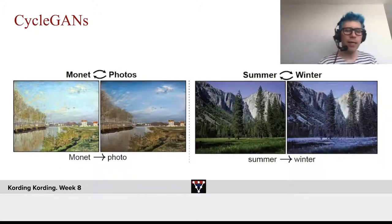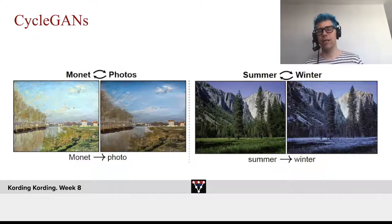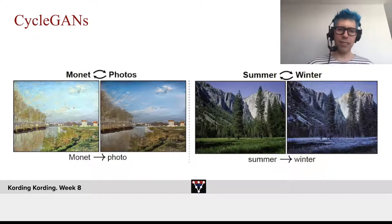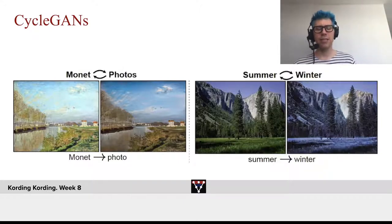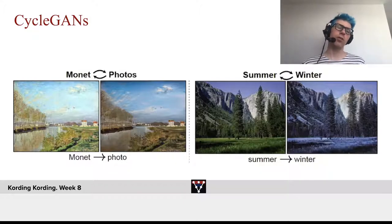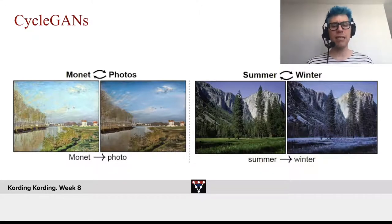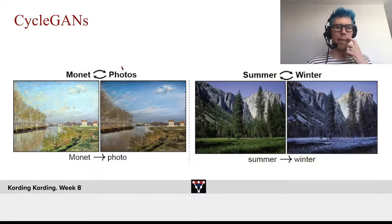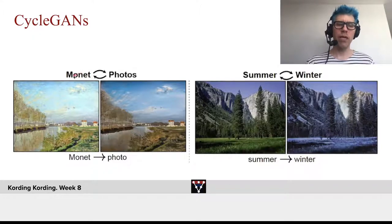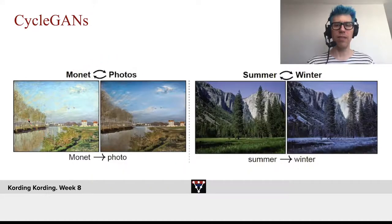Here's another idea that's sufficiently useful that I want you to apply it: cycle GANs. What's the idea of a cycle GAN? We have photos and we have paintings of Monet. Wouldn't it be cool if we could convert Monet paintings into photos and vice versa?